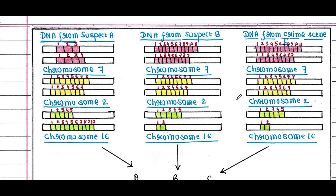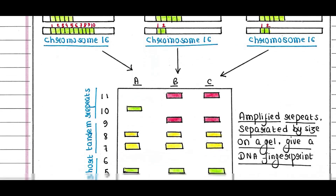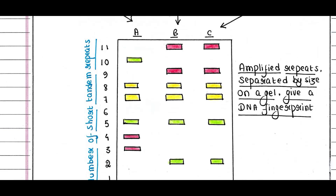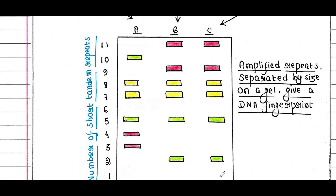The fragments are separated by agarose gel electrophoresis, transferred to a membrane, and a radiolabeled probe is added before performing autoradiography. This is the final result. Here you can see the number of VNTR repeats, ranging from 1 to 11 — meaning 1 VNTR repeat, 2 repeats of VNTR, 3 repeats of VNTR, and so on up to 11.